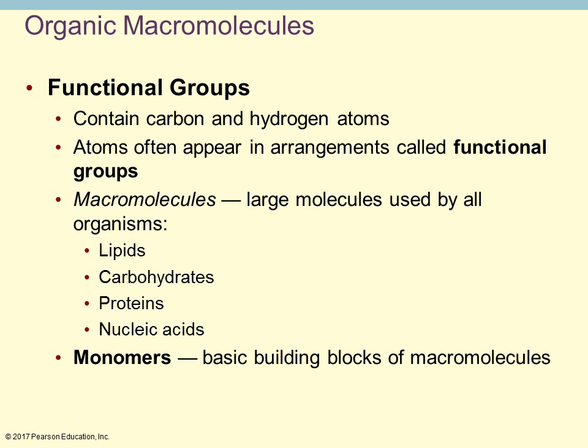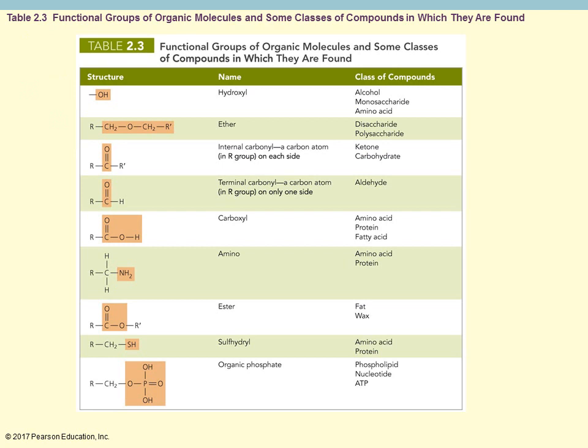Functional groups usually contain carbon and hydrogen appearing in certain arrangements. The focus in microbiology is on organic macromolecules — organic means it has carbon and hydrogen. There are four main macromolecules seen in biology: lipids, carbohydrates, proteins, and nucleic acids. When talking about these groups, you may refer to monomers, which are the building blocks of a particular macromolecule. This table shows some functional groups associated with different organic compounds.